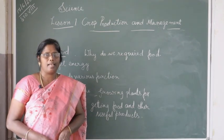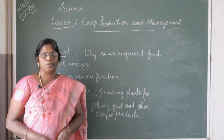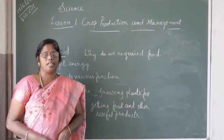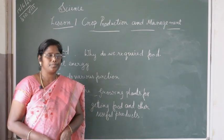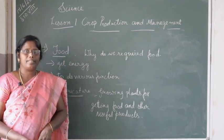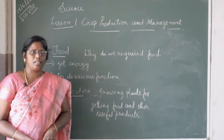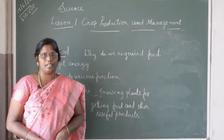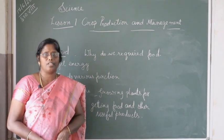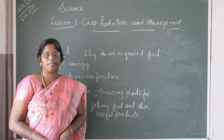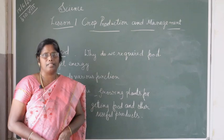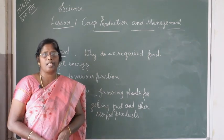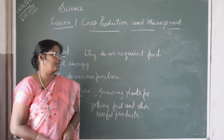Crops can be classified into two groups on the basis of the season in which they grow. India is a vast country and climatic conditions differ from region to region. Therefore, a variety of crops are produced in different regions of India. In spite of that, crops can be classified into two groups.